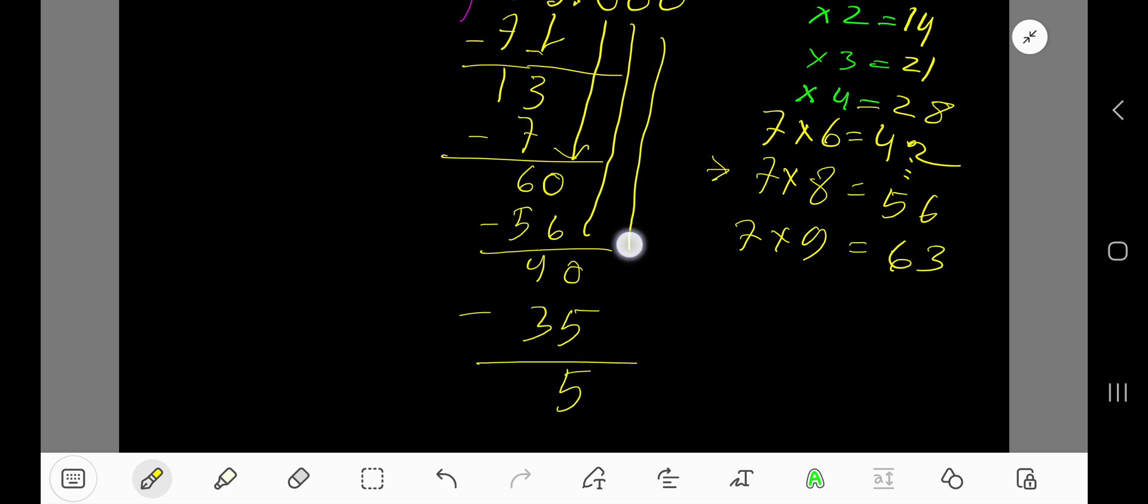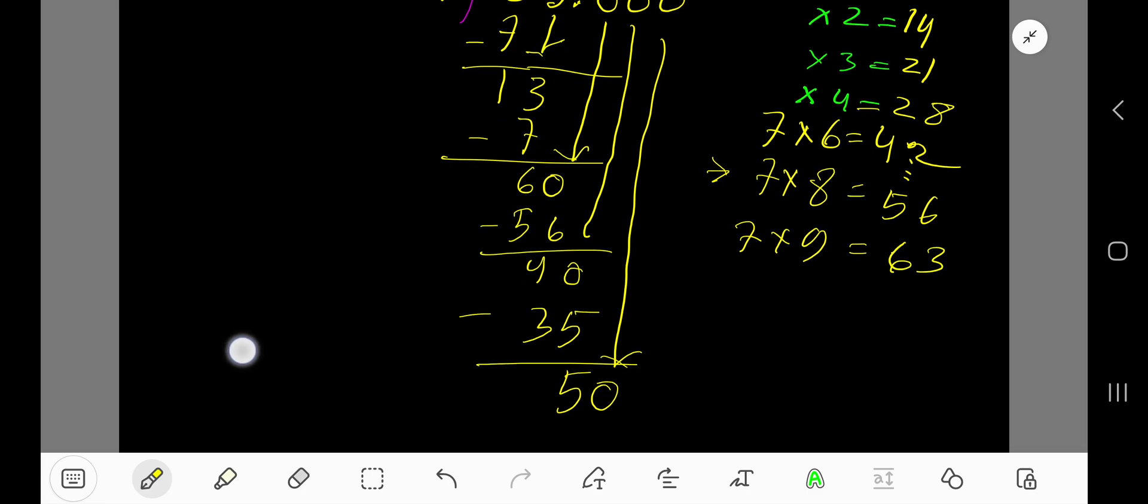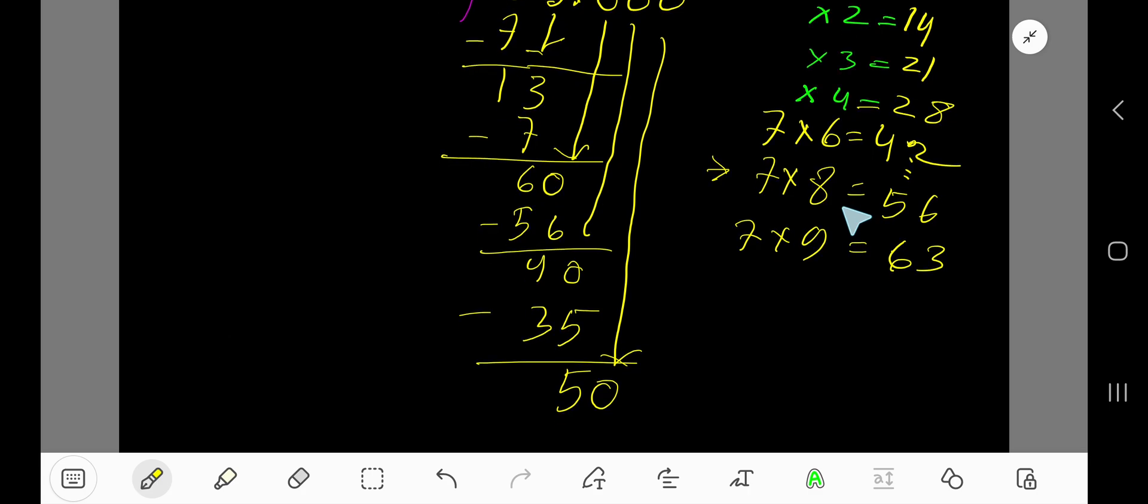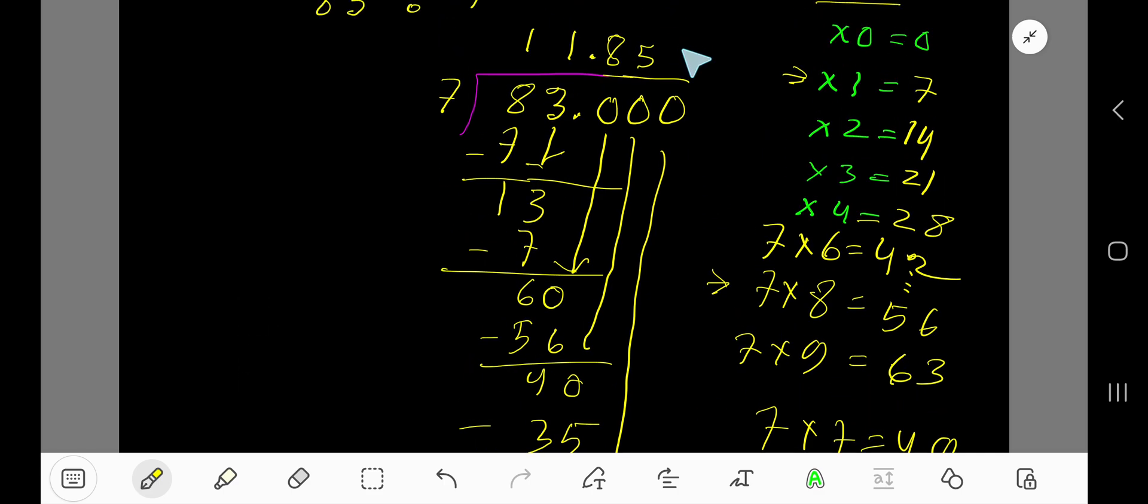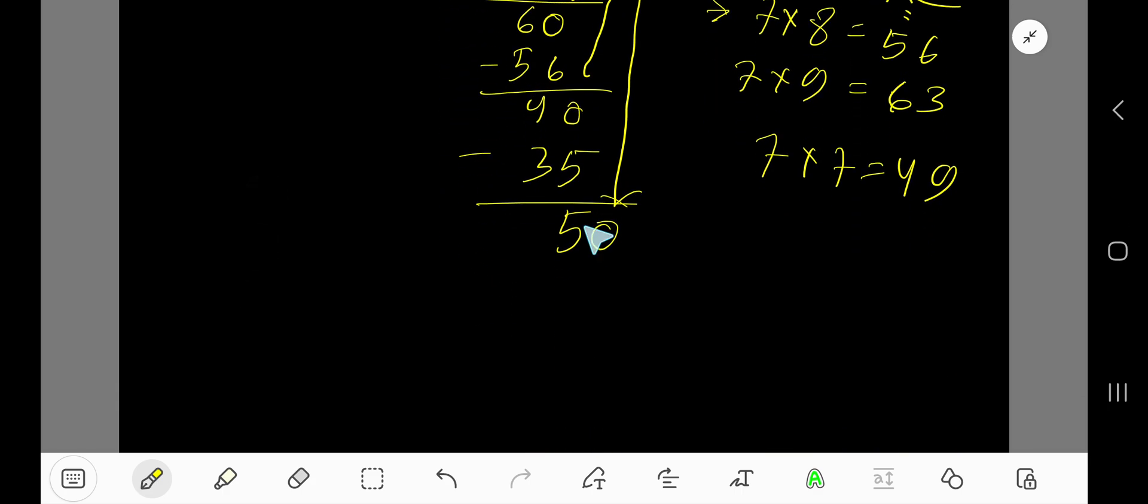Now bring down the next 0, so 7 goes into 50 how many times? 7 times 8 is 56 which is greater, so 6 times 42. But 7 times 7 equals 49, which is less than 50. 7 times, right? 7 times 7 is 49. If you subtract, we're getting 1.